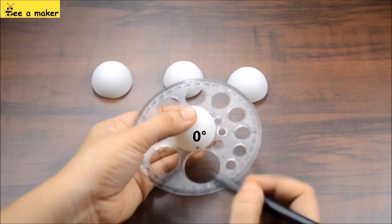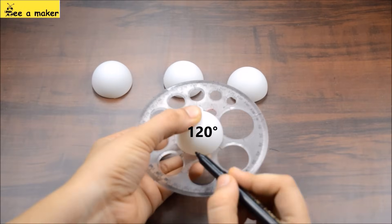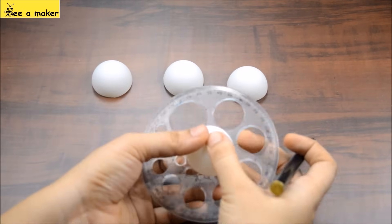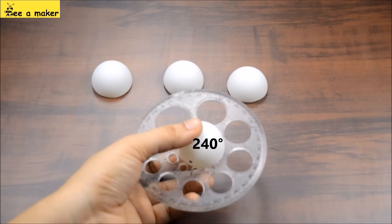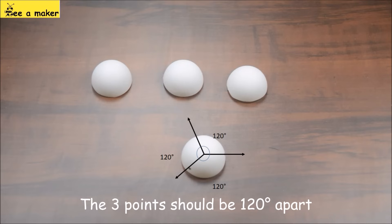Take 1 ball and mark at 0 degree, 120 degree and 240 degree. The 3 points should be 120 degree apart.